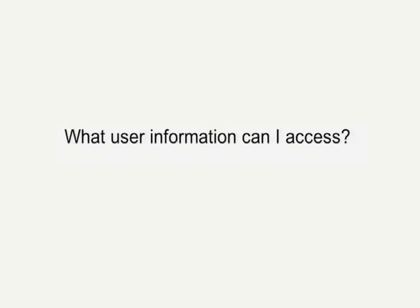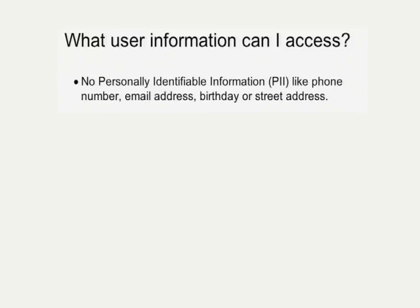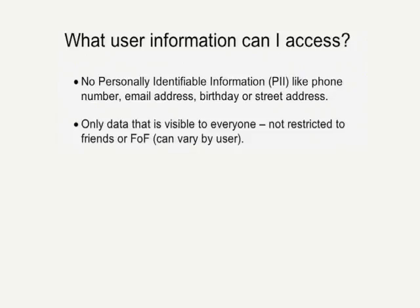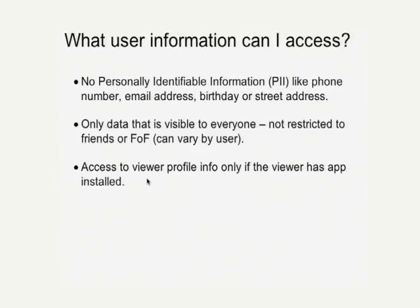An important thing to consider when designing your application is what information you can access about the user. Our general principle here is to protect the user's privacy, so we won't allow any information that's personally identifiable. This includes things like email addresses and phone numbers, or any information that could be harmful to users if it got into the wrong hands. Also, keep in mind that users can set the access control on their profile as well — some fields can be made available privately, to friends, or to everybody. Finally, you'll only be able to access the extended profile for users that have your application installed. So if a user is trying to look at information about their friends, they'll only see the extended information if their friends have the application installed as well.